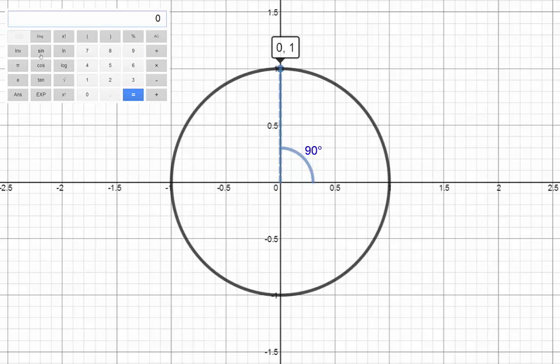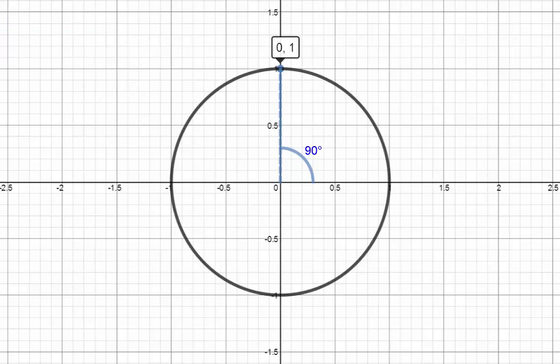You might have noticed that as we have increased the angle, the cos values have been getting smaller and now it's at 0. What do you think is going to happen if we move into the second quadrant?